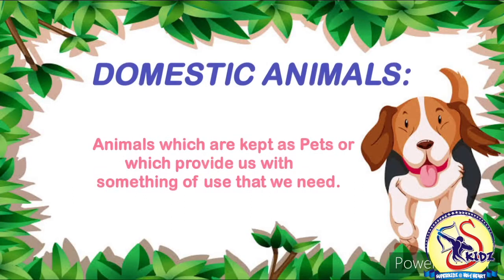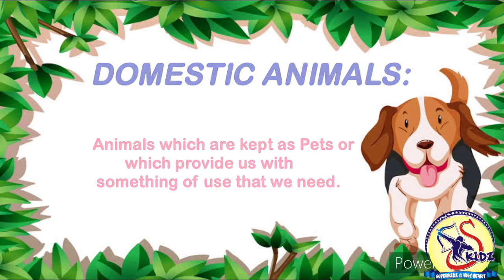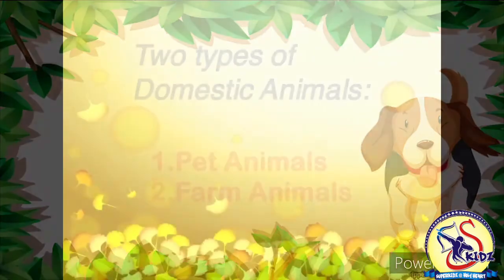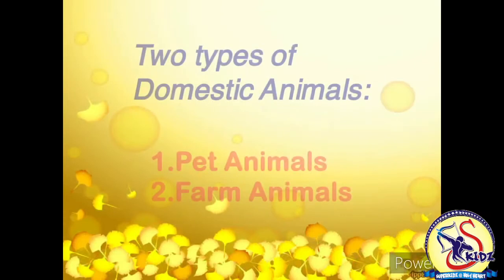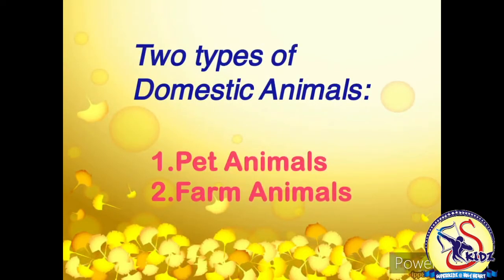Domestic animals are those which are kept as pets or which give us something of use. There are two types of domestic animals. Number 1: Pet animals. Number 2: Farm animals.